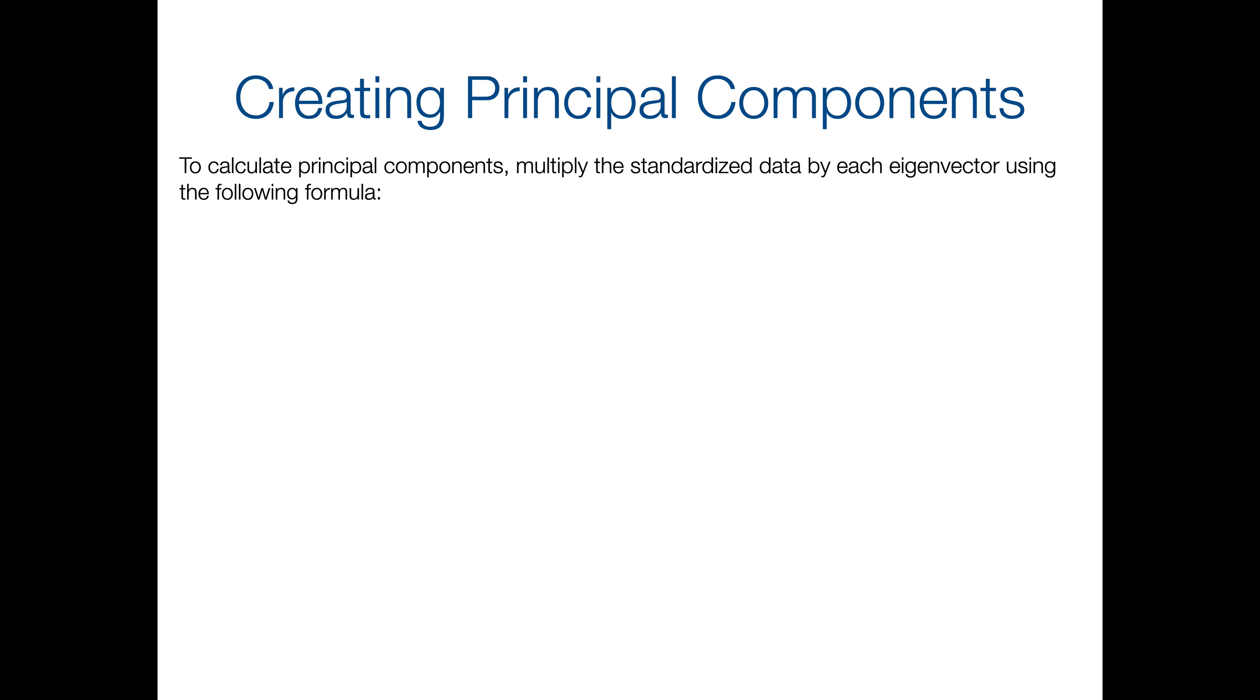To calculate, so now we're at the part, we've done a little review of linear algebra, both the notation and some of the methods. Now we are to creating principal components. So to create a principal component, you want to multiply the standardized data. Remember we said that part is important, you don't want any big variables kind of overwhelming everything. And there's a whole section in this chapter that will talk about the importance of that later. For now, just remember, standardize. So we want to multiply the standardized data by each eigenvector using the following formula. So this is, again, just some matrix notation. So the ith principal component, y sub i, is equal to the standardized data matrix z times the ith eigenvector, v sub i.